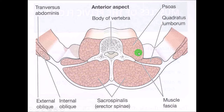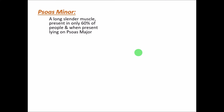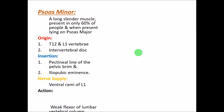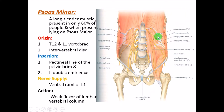The psoas minor is a long, slender muscle present in only 60% of people — it is absent in the other 40%. It lies in front of the psoas major. It takes origin from only the T12 and L1 vertebrae — not from T12 to L5 — from their bodies, transverse processes, and the intervertebral disc between them.